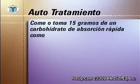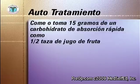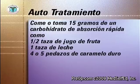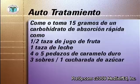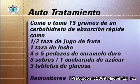Inmediatamente coma o tome 15 gramos de carbohidratos de absorción rápida. Esto puede ser la mitad de una taza de jugo de frutas, o sodas no dietéticas, o una taza de leche, o cuatro o cinco pedazos de caramelo duro, o tres sobres, o una cucharada de azúcar, o tres tabletas de glucosa. Vuelva a monitorear su azúcar 15 minutos después.